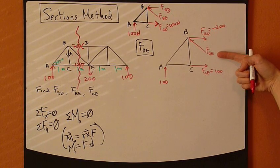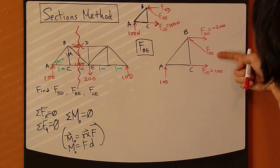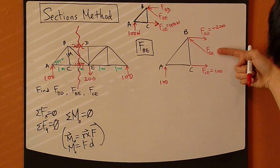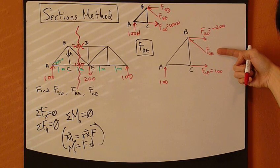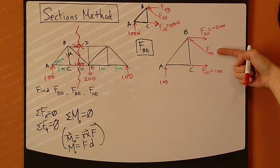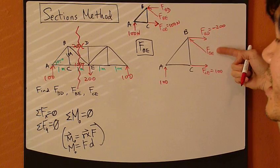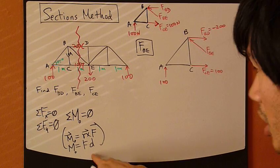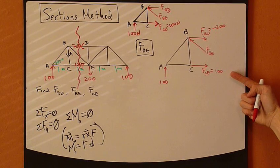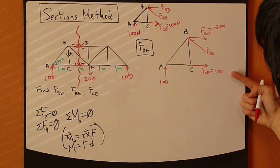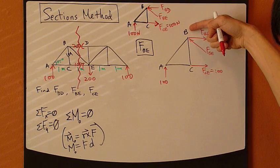BE is the unknown here. Pick a joint where BE will appear in the equation. Pick any joint, doesn't really matter, but pick a joint where it's easier to figure out the distance D between the line of action of BE and that joint. Obviously, we're not going to pick joint B because BE will disappear.